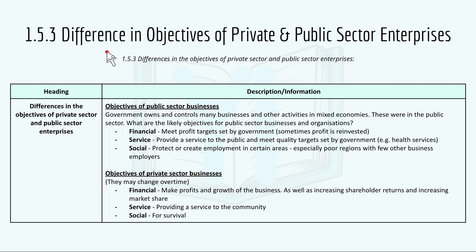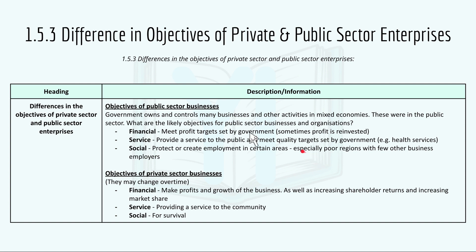Then we have 1.5.3, the differences in objectives of private and public sector enterprises. The government owned and controlled many businesses in mixed economies — these were the public sector. The likely objectives for public sector businesses include: financial — meeting profit targets set by the government, with profit sometimes reinvested; service — providing a service to the public and meeting quality targets, for example health services and water supply; and social — protecting or creating employment, especially in poor regions with few other business employers.